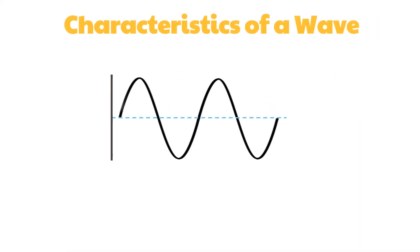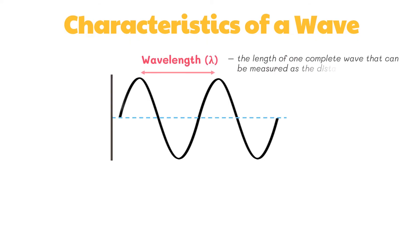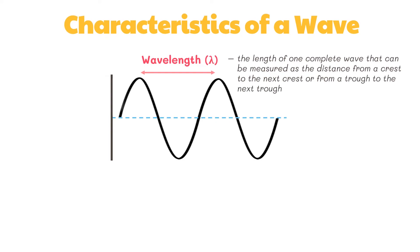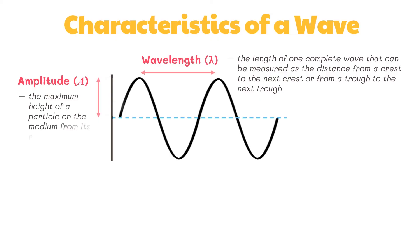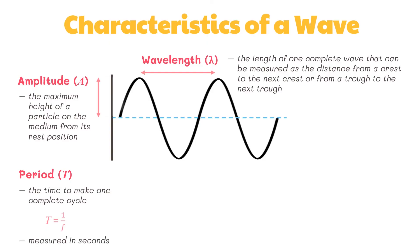Several quantities can be used to describe a traveling wave. The wavelength is the length of one complete wave, measured as the distance from a crest to the next crest, or from a trough to the next trough. The amplitude refers to the maximum height of a particle on the medium from its rest position — the distance from the rest position to crest or trough. The period is the time to make one complete cycle and is the reciprocal of frequency. Thus, period equals 1 over frequency, and it is measured in seconds.